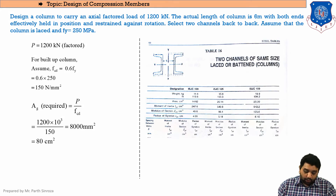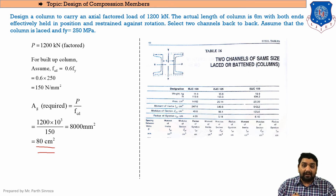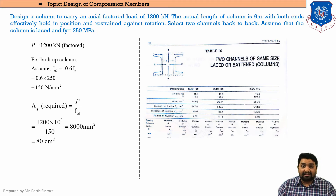From page 60 onwards in the steel table, the two-channel section pages begin. For channel sections, unlike ISHB for I sections, you can use any section provided the area is near 80 cm². We swipe through the pages looking for a combination whose area is close to 80 cm², found on page 64.